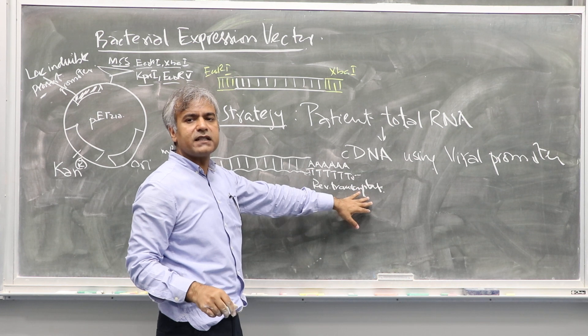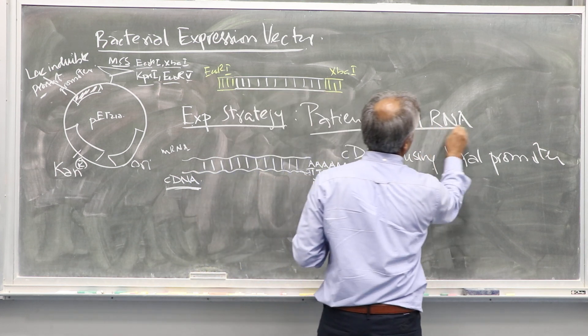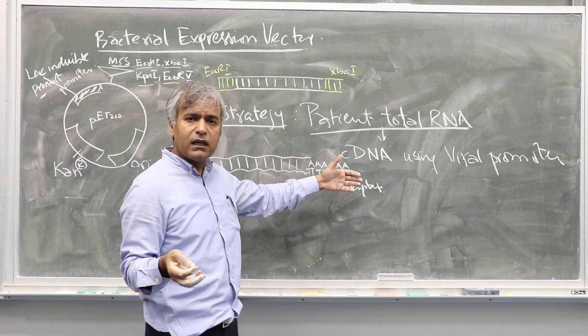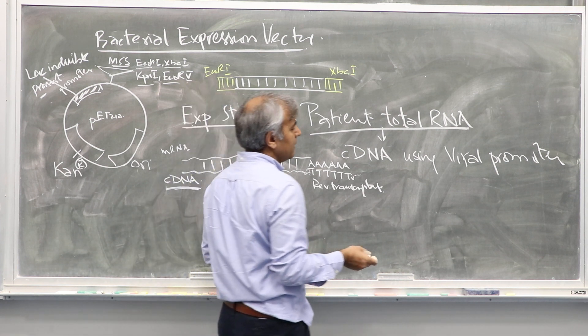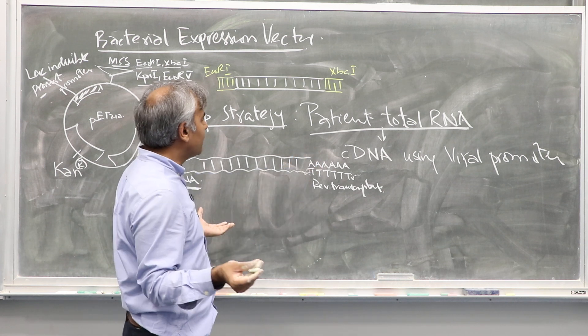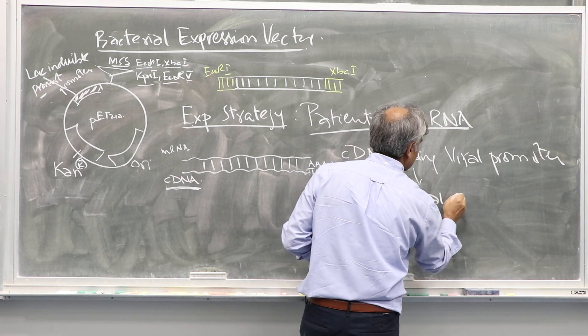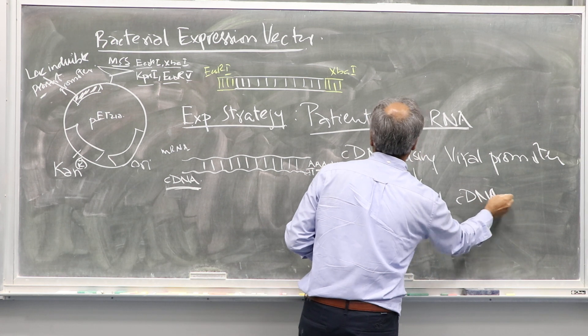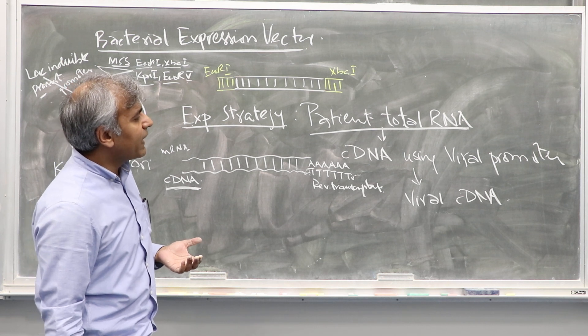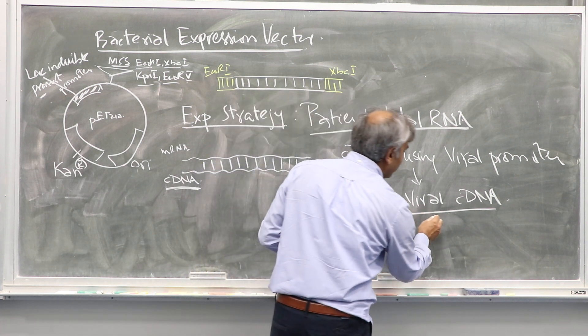Reverse transcriptase is the enzyme which performs this function. So what we do: we will take patient total RNA, we can use viral-specific primers instead of oligo-dT or you can use oligo-dT as well, and then you make cDNA for the virus. Once you have viral cDNA, what we can do is we will now use spike-specific primers.